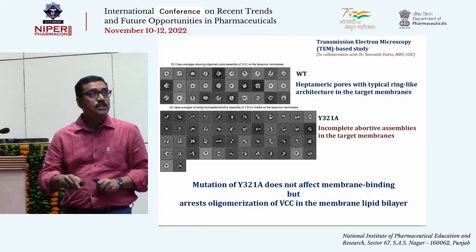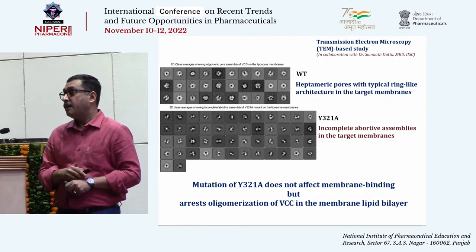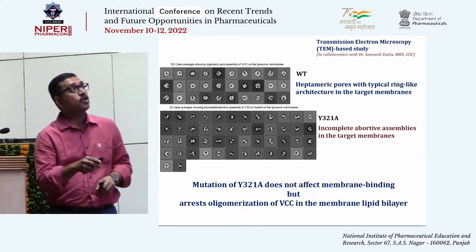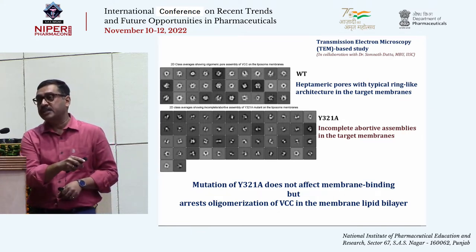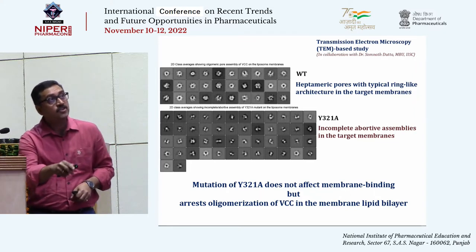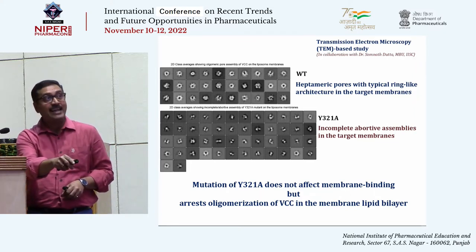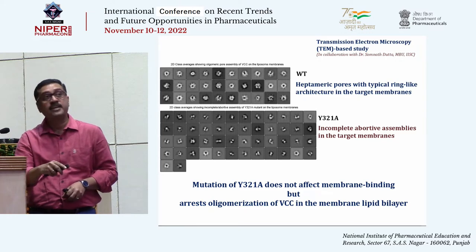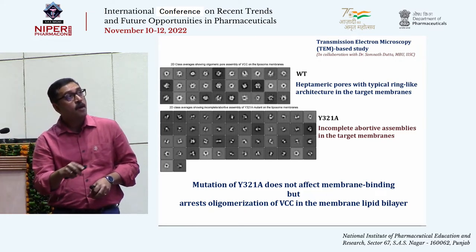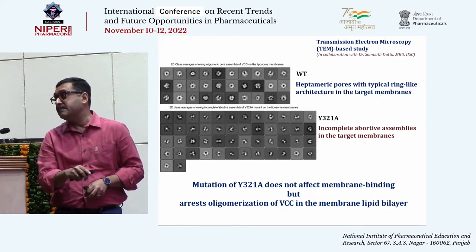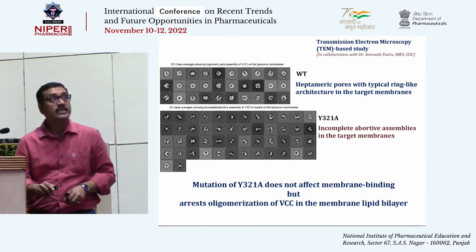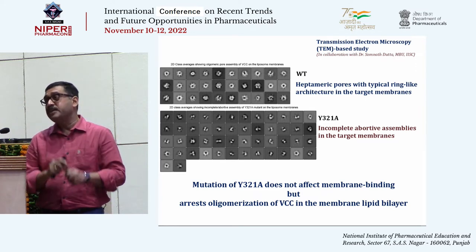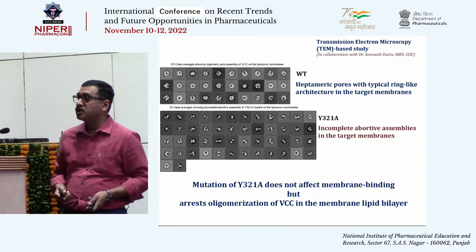Interestingly, this mutation did not affect membrane-binding propensity but blocked oligomerization. Wild-type VCC normally forms heptameric ring-like architectures in the target membrane. In contrast, the tyrosine 321 to alanine mutant fails to form similar ring-like or pore architectures. Rather, it formed mostly incomplete and abortive assembly states, suggesting this mutant arrests the membrane-bound toxin molecule in an abortive intermediate state and does not allow functional pore formation to take place.